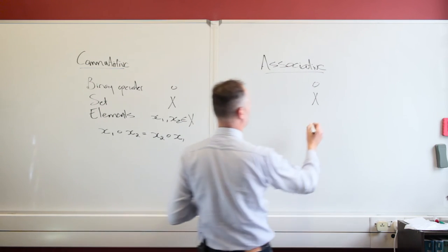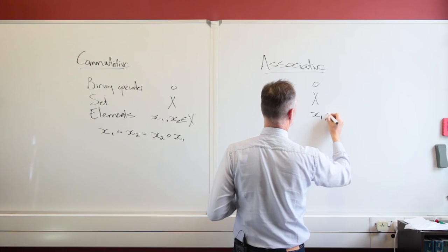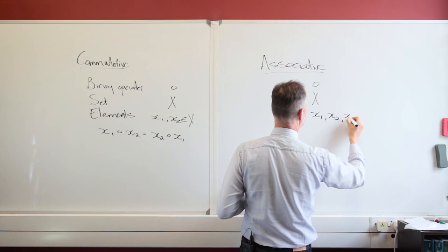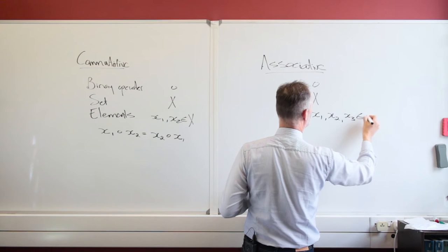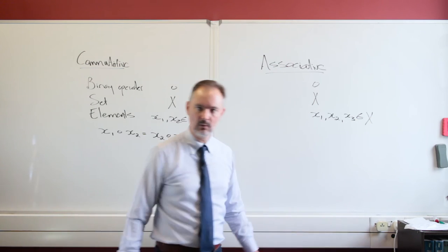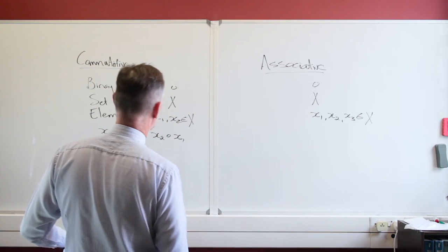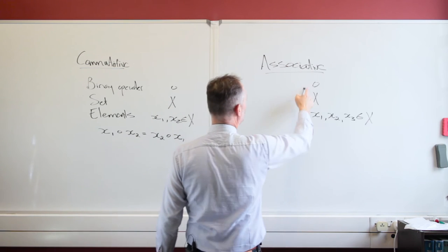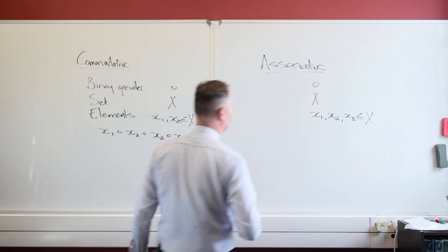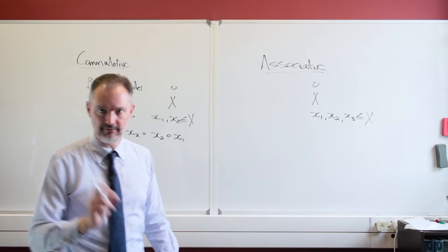And now the elements that we're going to have is we're going to have one, two, and three elements. They are all elements of our set X. And we say now that this binary operation on these elements of the set is associative if the following holds.